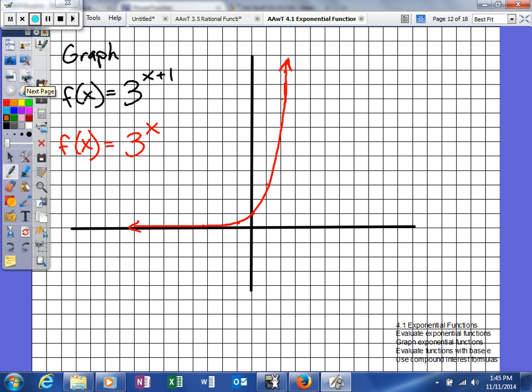On the first example, we're asked to graph f of x is equal to 3 to the x plus 1 power. So what we're actually going to do is we're going to take the exponential function f of x is equal to 3 to the x power and we're going to shift that graph. So what we have right here is this. This is actually going to represent our c.